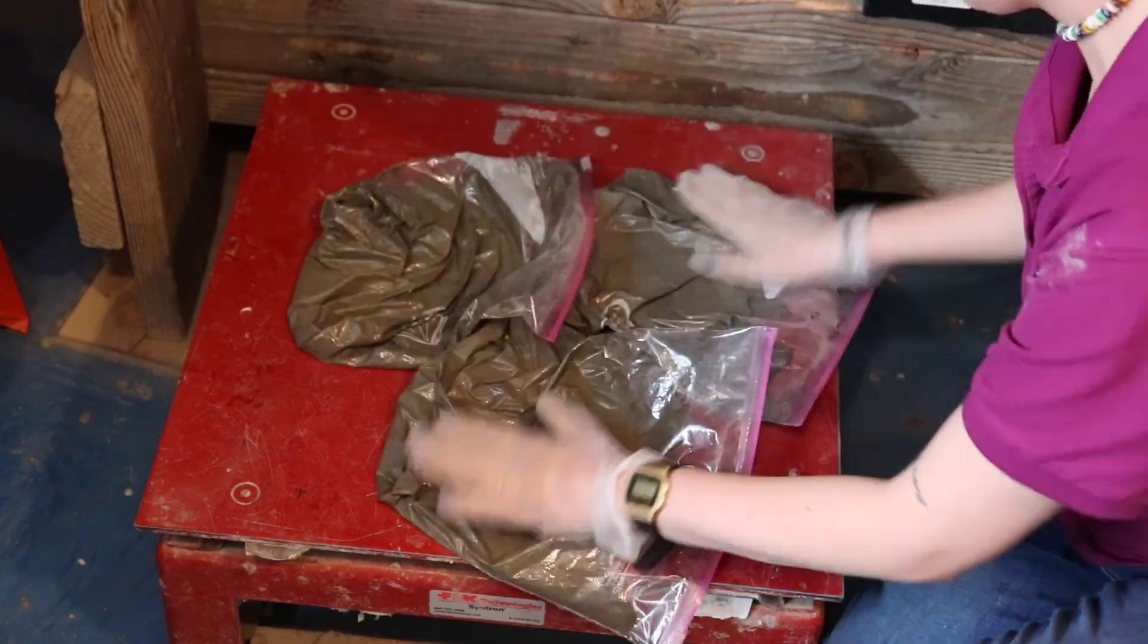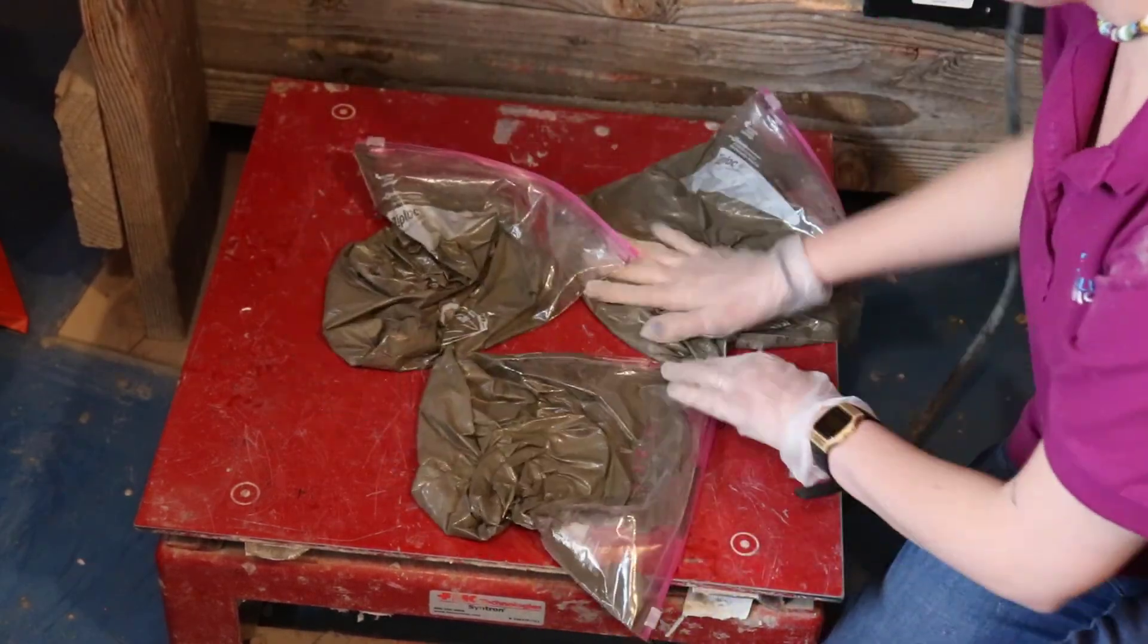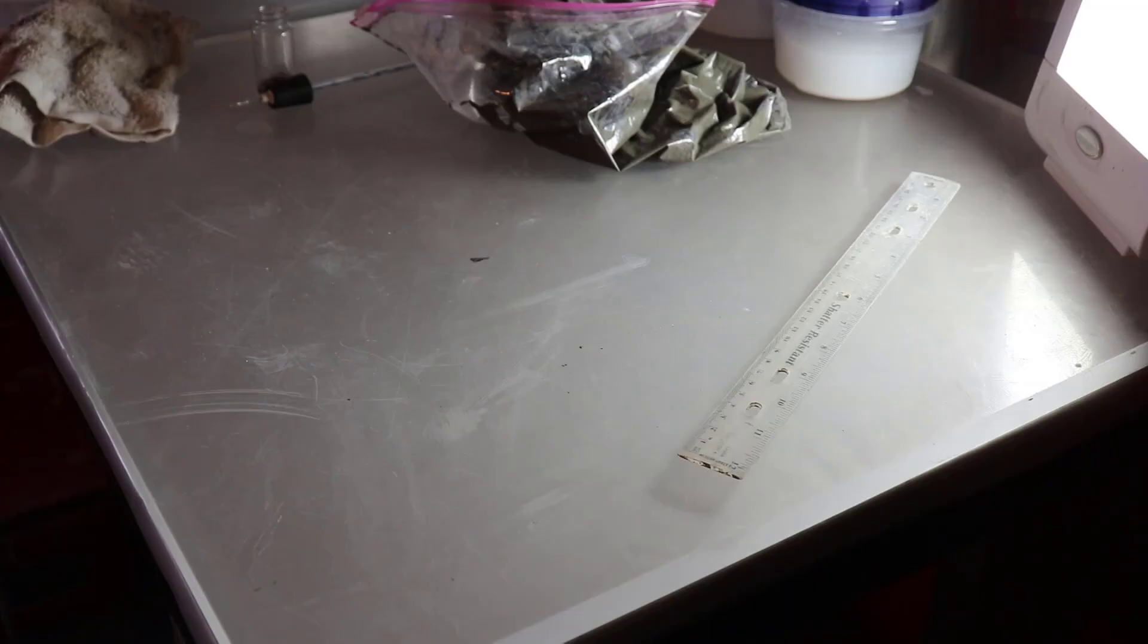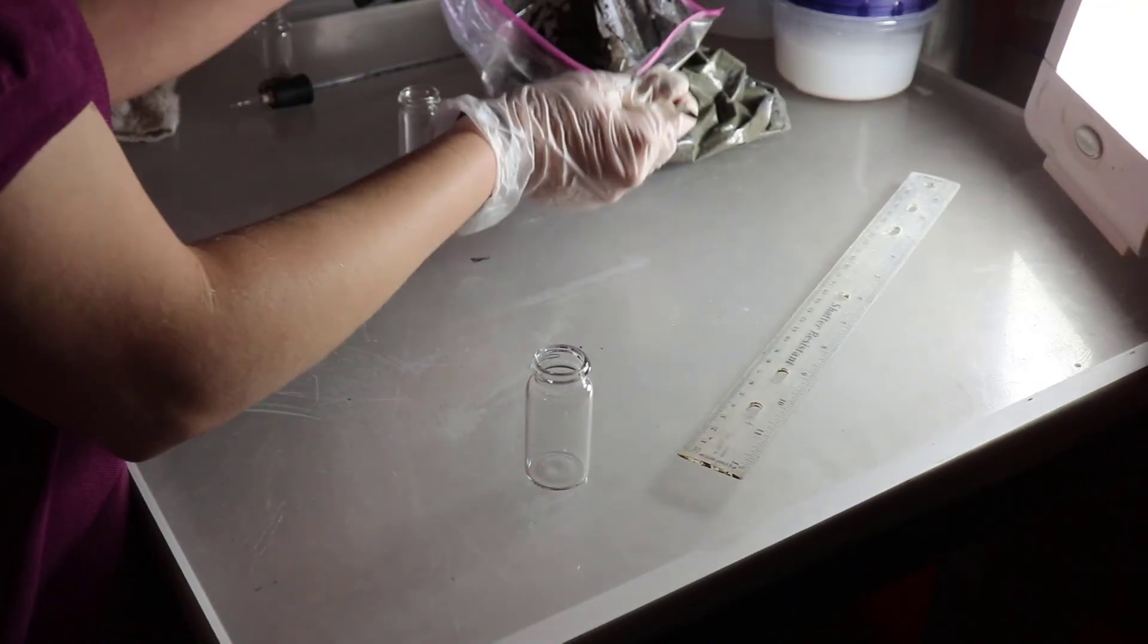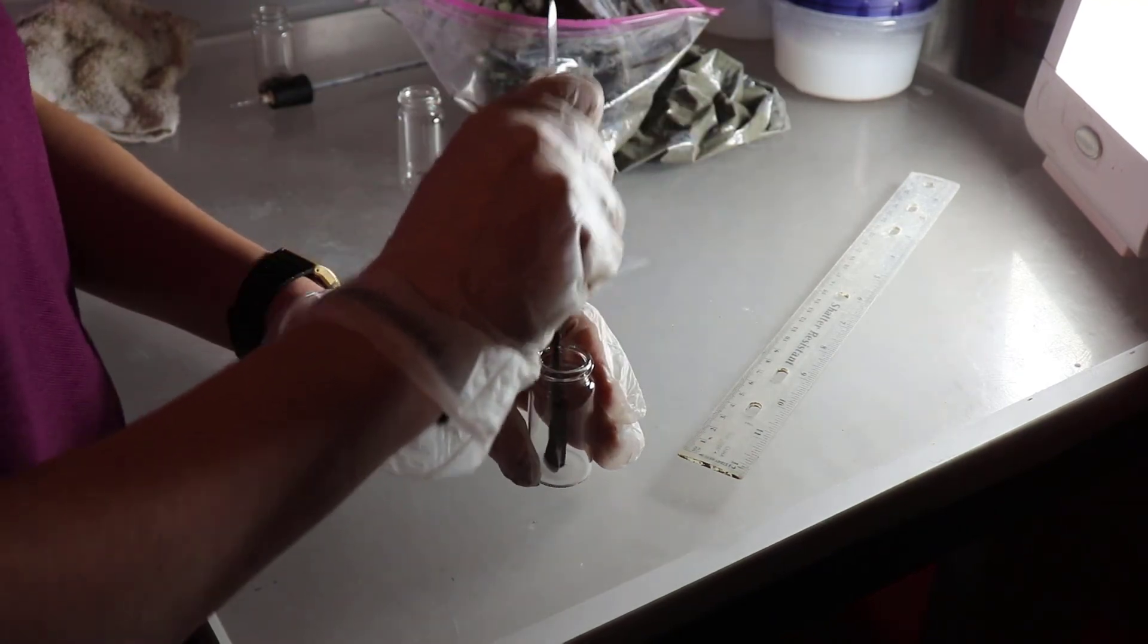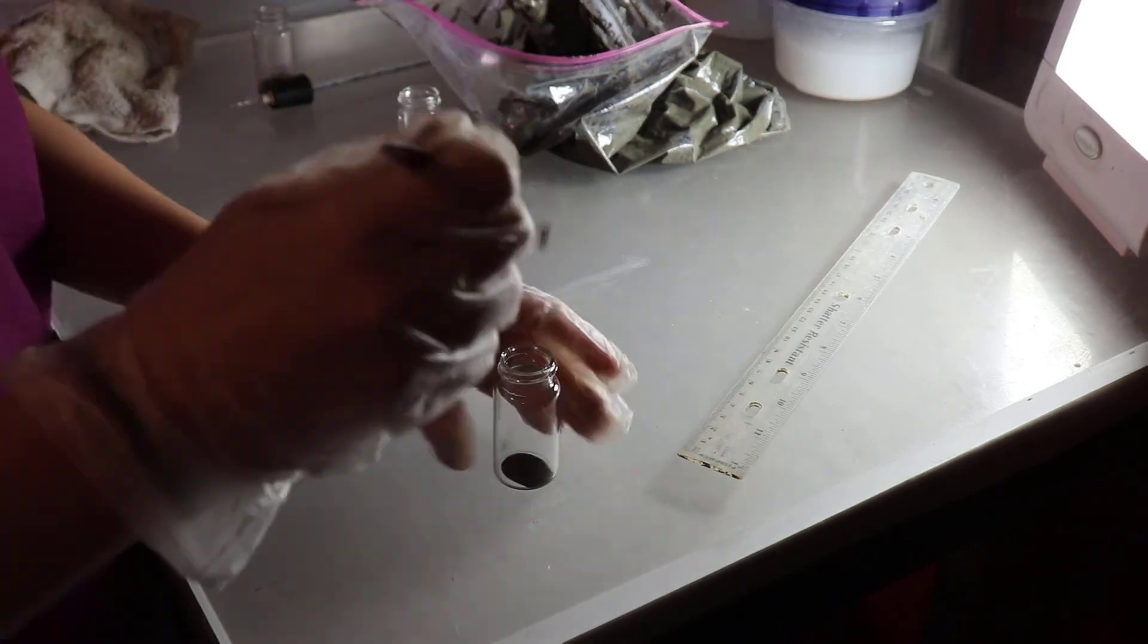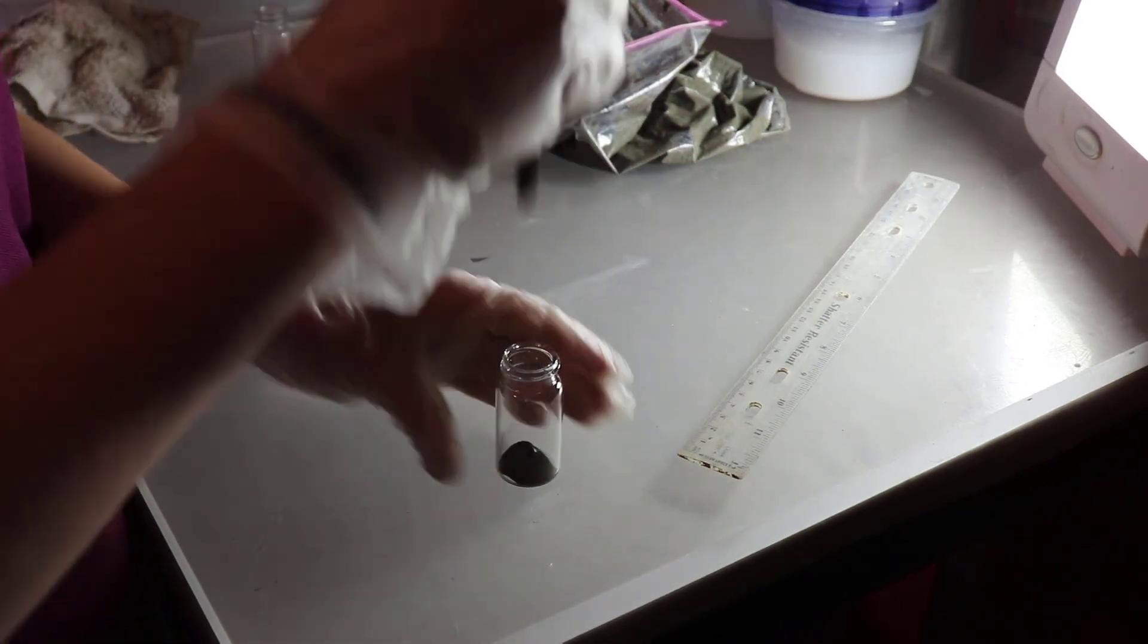Once it's on the table, start agitating it, moving it around, really getting that mix consistent. Before you place the mortar mix into the vial, you're going to weigh the vial and the stopper to the nearest 0.01 gram, and then you'll go ahead and put the mix into the system. You'll fill it up to about three millimeters in height, making sure to consolidate it with each amount of paste.